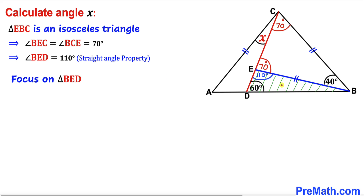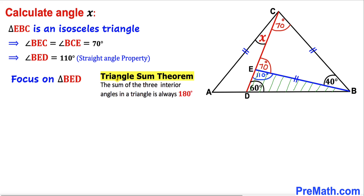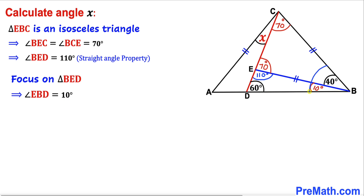Here's our next step. Let's focus on this triangle BED and recall the triangle sum theorem. According to this theorem, the sum of three interior angles in a triangle must be 180 degrees. If this angle is 60 degrees and this angle is 110 degrees, so therefore this angle has got to be 10 degrees. Therefore this angle EBD turns out to be the sum of these two individual angles: 10 plus 40 is going to become 50 degrees.